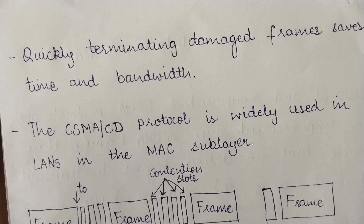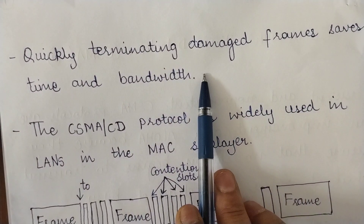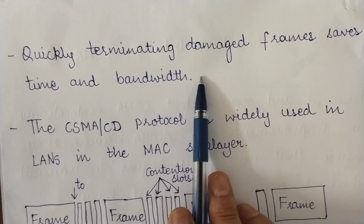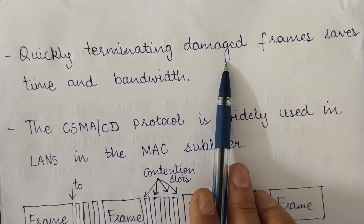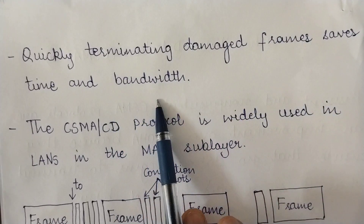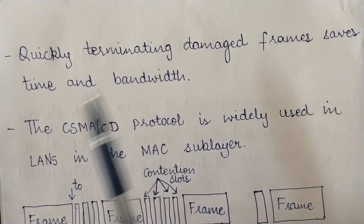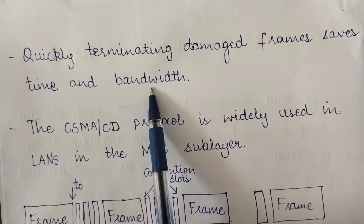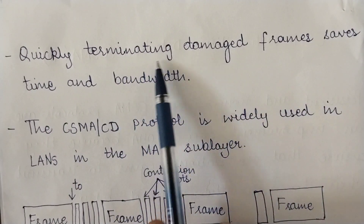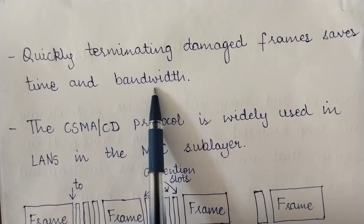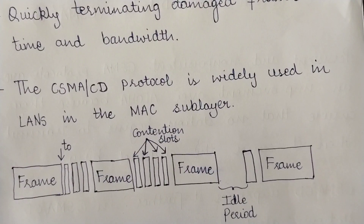Quickly terminating the damaged frames saves time and bandwidth. Even if transmission were not aborted, the frame would be garbled, so there is no point transmitting a garbage frame. The best option is to terminate the damaged frames immediately, which saves both the time and the bandwidth of the channel.